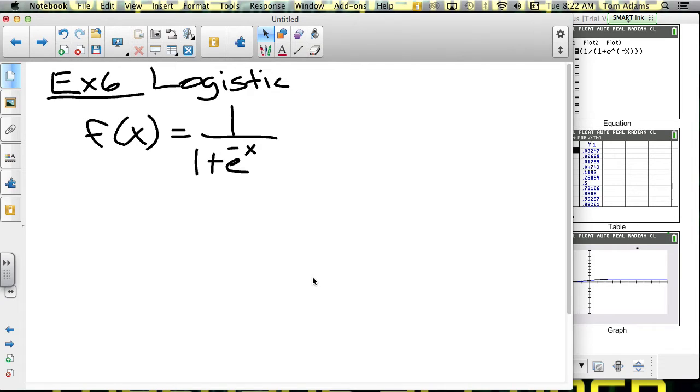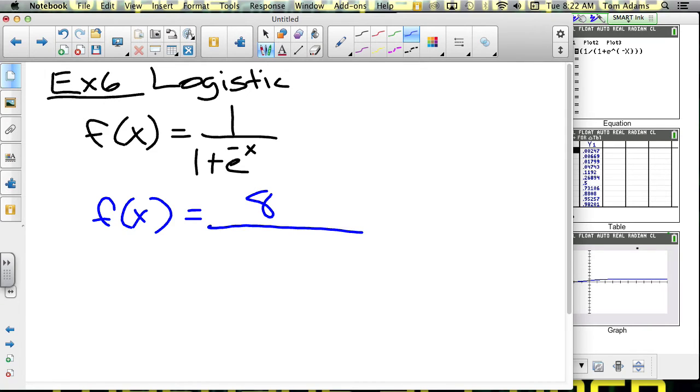We can transform the graph by doing a couple different things. And so I'm just going to jump into example number six. And example number six gives us this logistical equation. And it looks a little different. 8 over 1 plus 3 times 0.7 raised to the x.